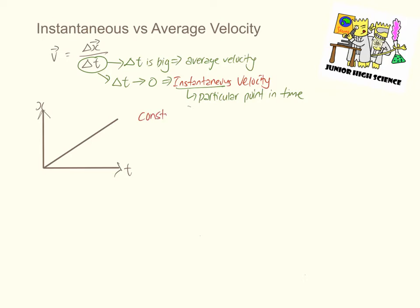Let's take a look at this position-time graph, which is a straight line. We can see that this is an example of a constant velocity motion.